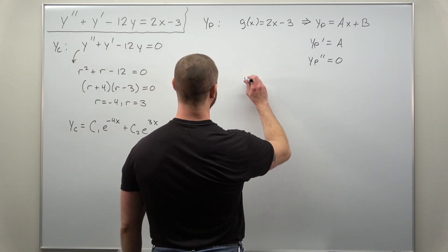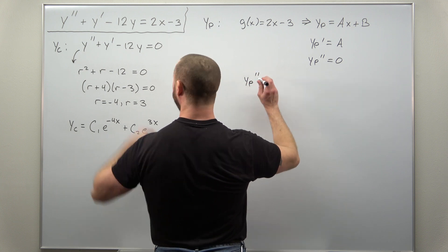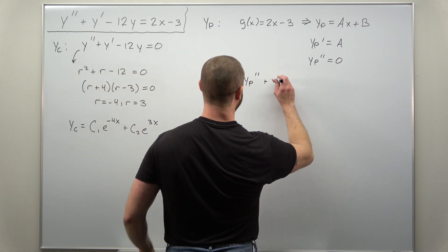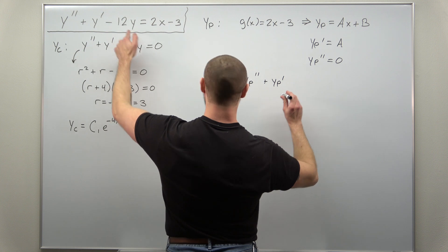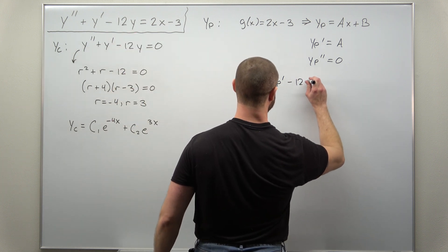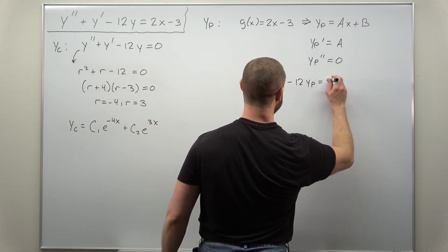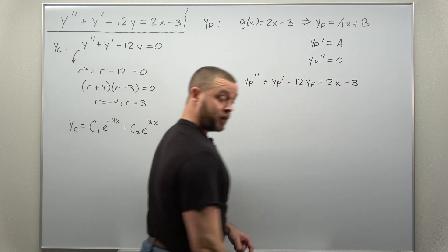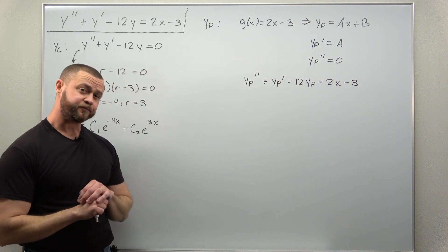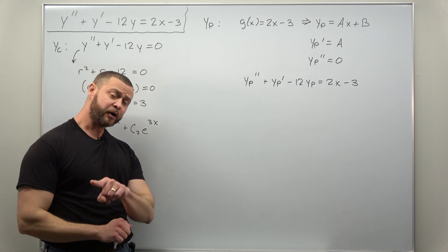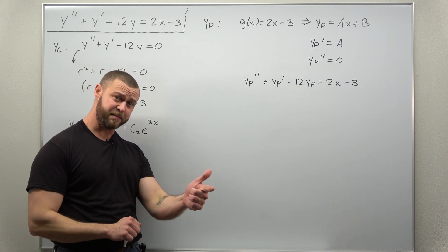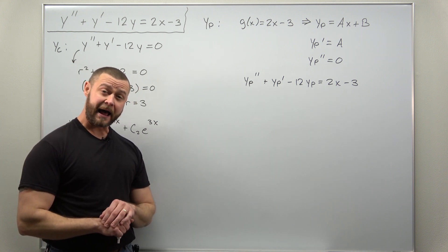We want yp double prime plus yp prime minus 12yp to equal 2x minus 3. And we have to determine the values of a and b that make that happen.